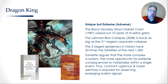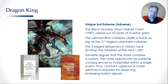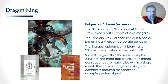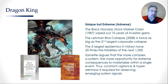Sornette argues that the more complex a system, the more opportunity for extreme consequences to materialize within a single event. He goes into complex systems theory quite extensively, and I've argued many times that the future of modern-day risk management lies in the complexity sciences — Sornette agrees and writes extensively on this topic. Because complex systems are highly unpredictable, agile, and evolutionary, most dragon kings are unpredictable in terms of long-term forecasting. Thus, constant vigilance and hyper-alertness is required for observing emerging system signals. Many people who play in the markets watch data in real time to look for these emerging signals, so you've got to get good data and be hyper-aware of the possibility of these emerging threats.